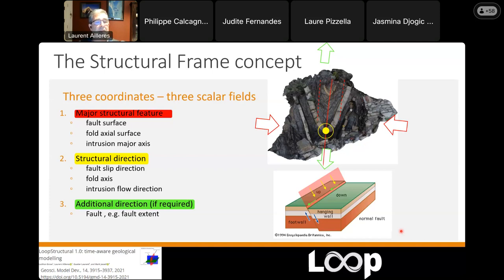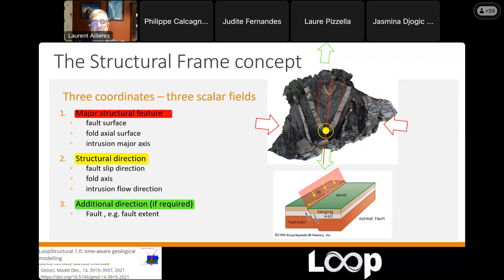For folds, we build a scalar field perpendicular to the axial surface, a scalar field going along the fold axis, and a third scalar field parallel to the extension direction of the fold. We do the same thing for faults: there is a scalar field perpendicular to the fault, a scalar field along the offset direction, and a third scalar field in the fault plane perpendicular to the offset direction indicating the fault length. For intrusions similarly, we have a scalar field growing with the flow direction, a scalar field growing in the direction of intrusion growth (the thickness), and a third scalar field characterizing the lateral extent.